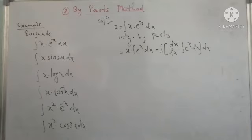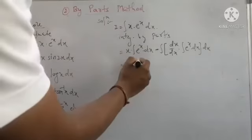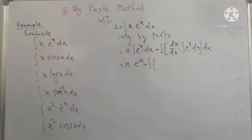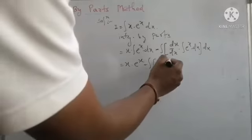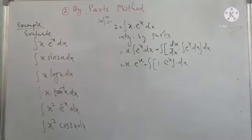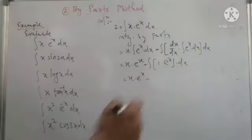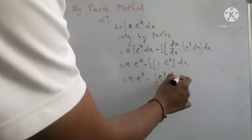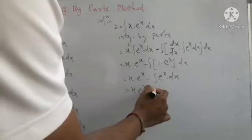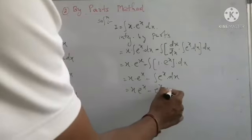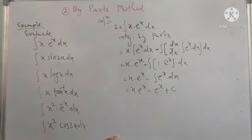Now simplifying: x remains outside and the integration of eˣ is eˣ. Then, minus integration of the bracket — derivative of x is 1, multiplied by the integration of eˣ which is eˣ. Simplifying the bracket: in the first term we have x·eˣ, and minus the integration of eˣ·1, which is eˣ. Finally, the result is x·eˣ minus eˣ plus C.